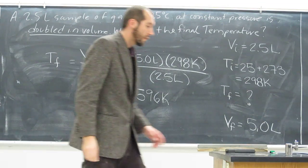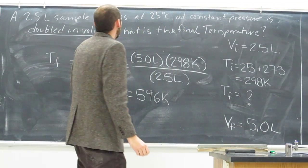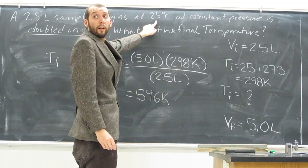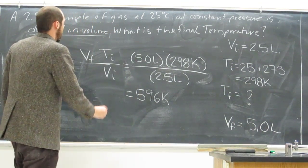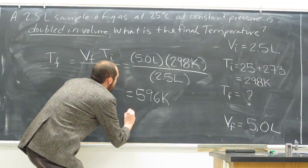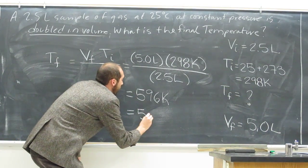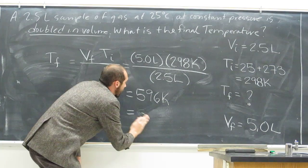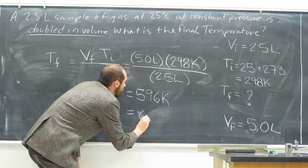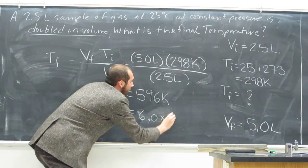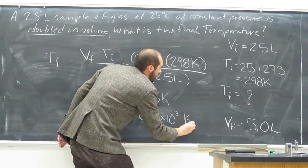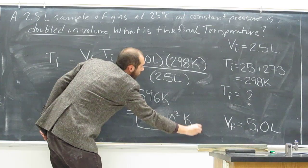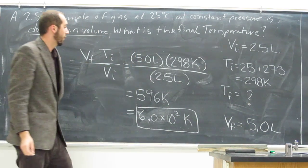Of course, in this problem, we only have 2 significant figures, so we're going to have to do something to this answer. So it's going to be 6.0 times 10 squared Kelvin, will be the final answer to this problem.